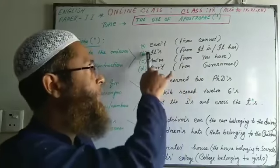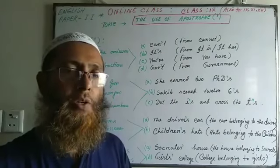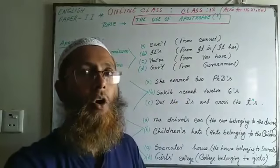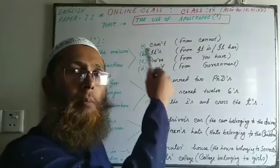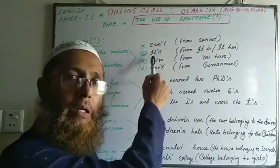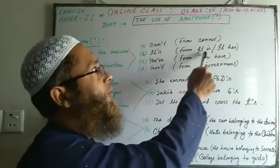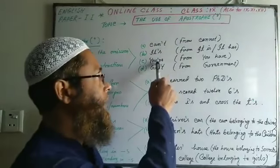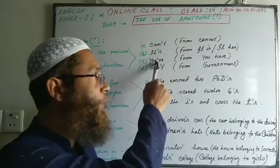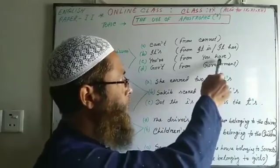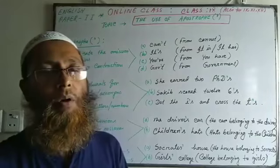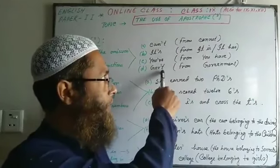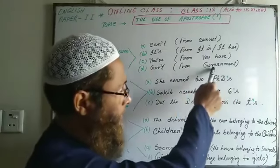Another example: 'it's' — this refers to 'it is' or 'it has'. From 'it is' or 'it has' you can write 'it's' by using an apostrophe s after 'it'. Another example: 'you've', where the letter 'a' is omitted. Similarly, 'gov't' — from the word 'government', a few letters have been omitted to form 'gov't'.